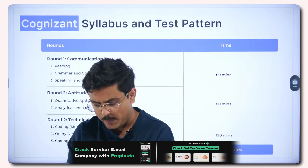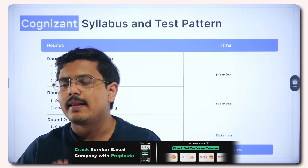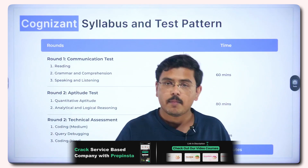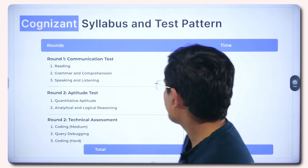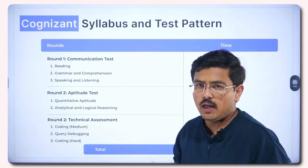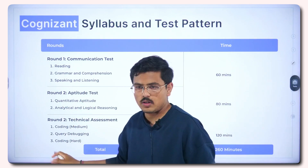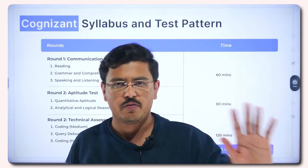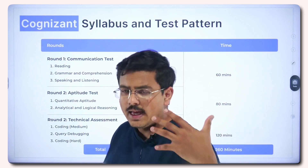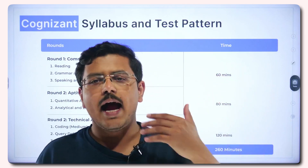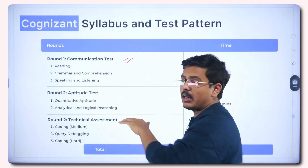Whenever I explain any syllabus or test pattern, I always give you the skeleton of the exam first, because before attempting an exam you need to understand what kind of exam it is. There are three rounds: Round One is a communication test where reading comprehension, speaking, and listening skills are tested — usually an AI-based test where you record your voice and solve listening assessments.